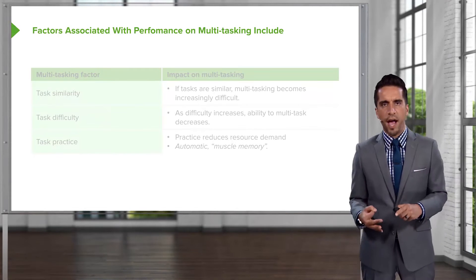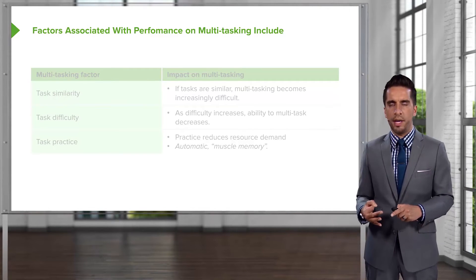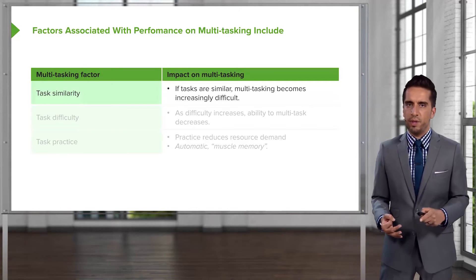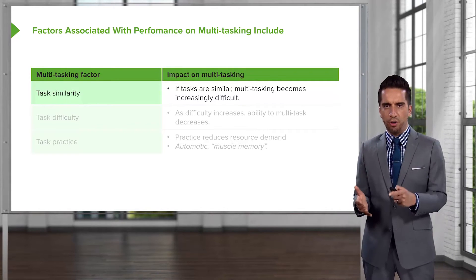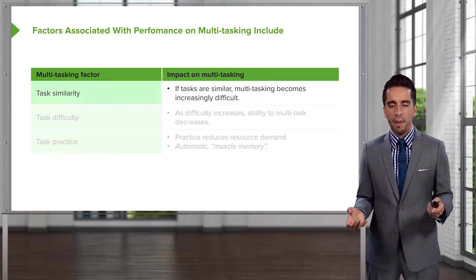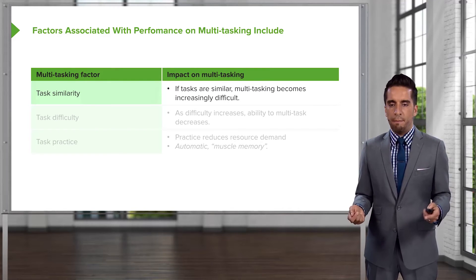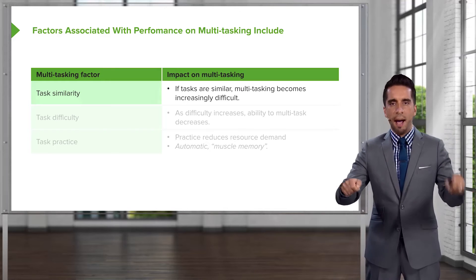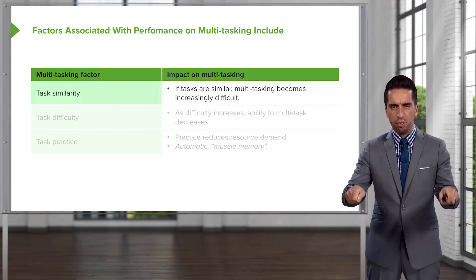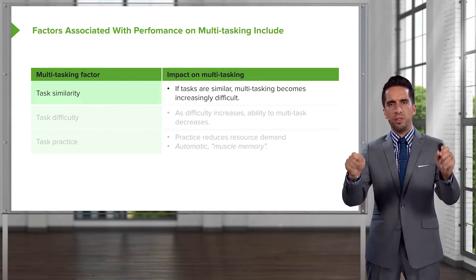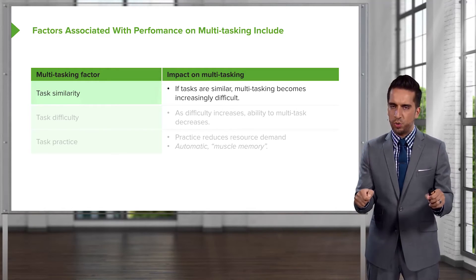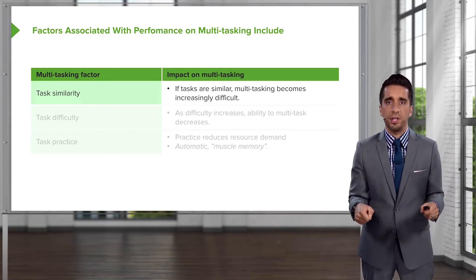Three factors impact the performance of multitasking. The first is task similarity: if the tasks are similar, multitasking becomes increasingly difficult. For example, if you're asked to cut an onion and cut an apple at the same time — they're both cutting, both requiring the same type of activity — the tasks are very much related and it becomes increasingly hard.